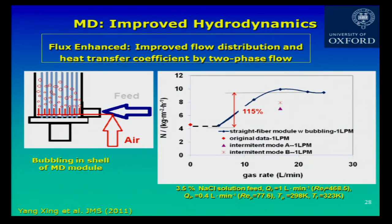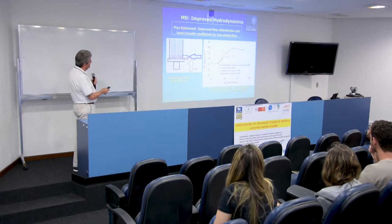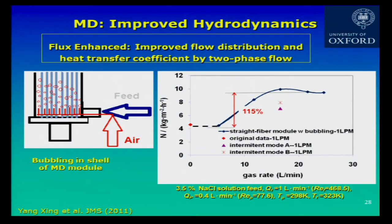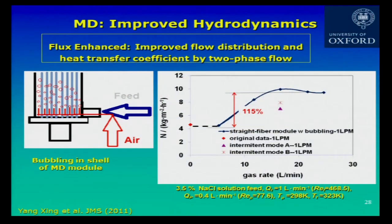We can do even better using air bubbles — the same concept as dissolved air flotation. By introducing air bubbles along with the feed, we enhance flux into the membrane by improving flow distribution and heat transfer coefficient via two-phase flow. The air bubbles promote mixing and turbulence on the outside of the membrane. Starting at a low flux of around 4, as the gas rate increases, above a certain point there's a very big increase in flow rate — about a 115% increase due to the use of air bubbles. Air bubbles are certainly going to help in this case.